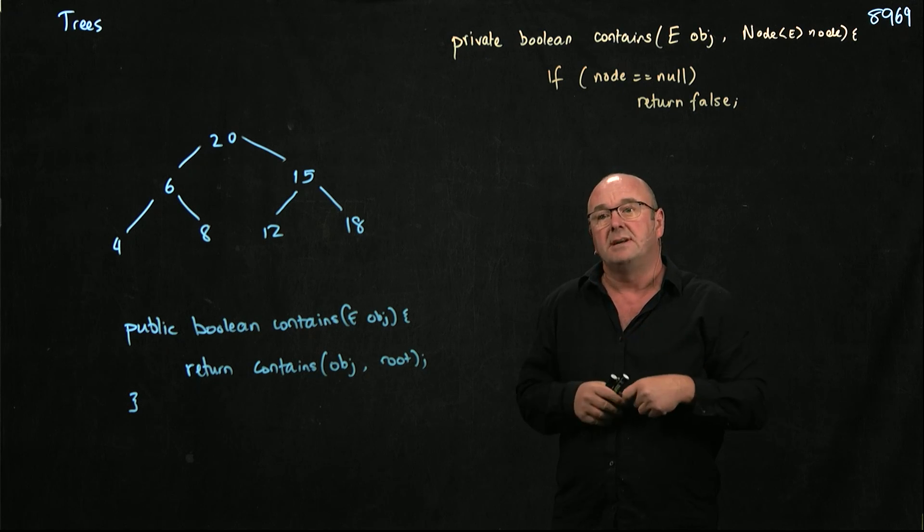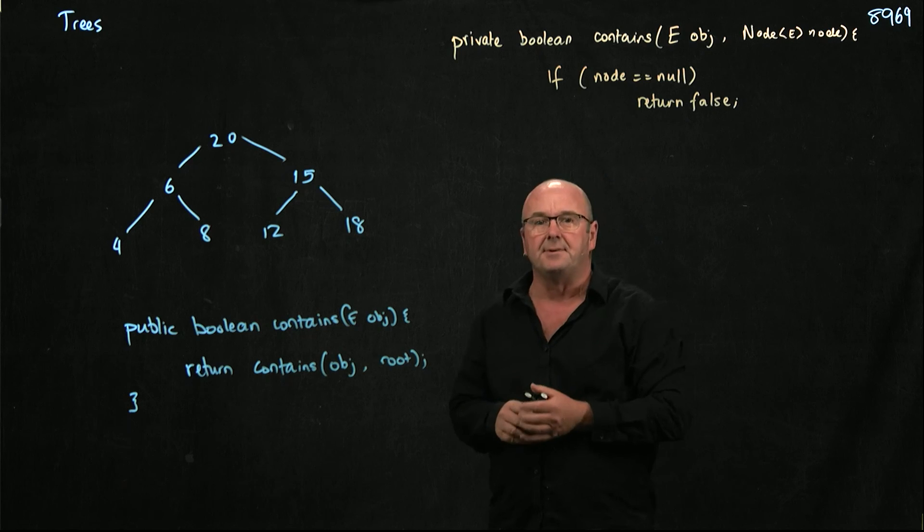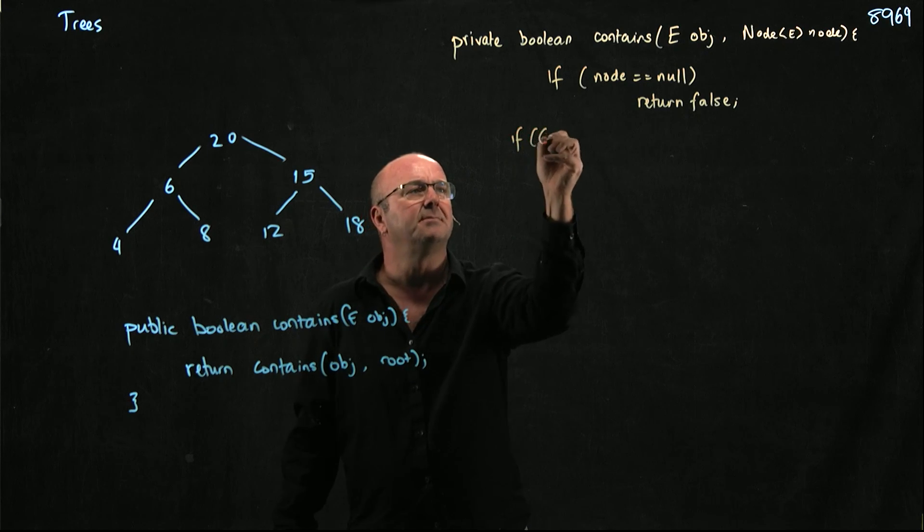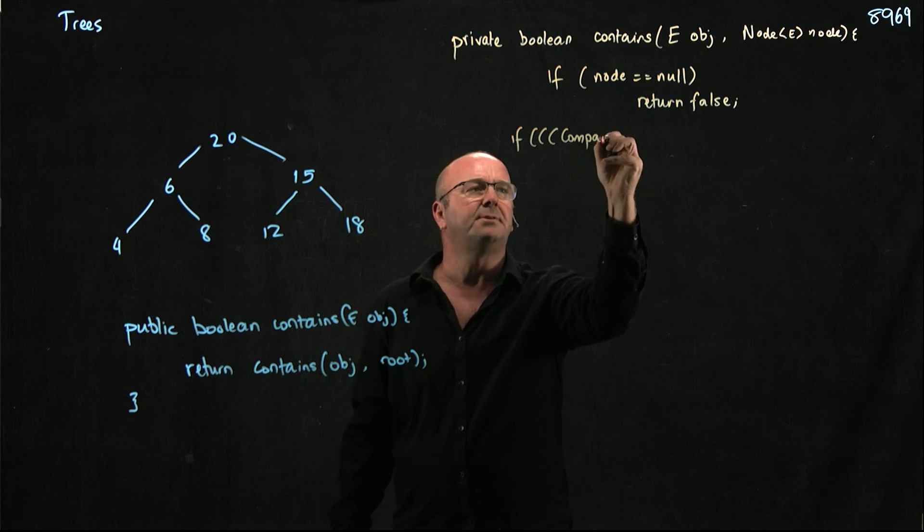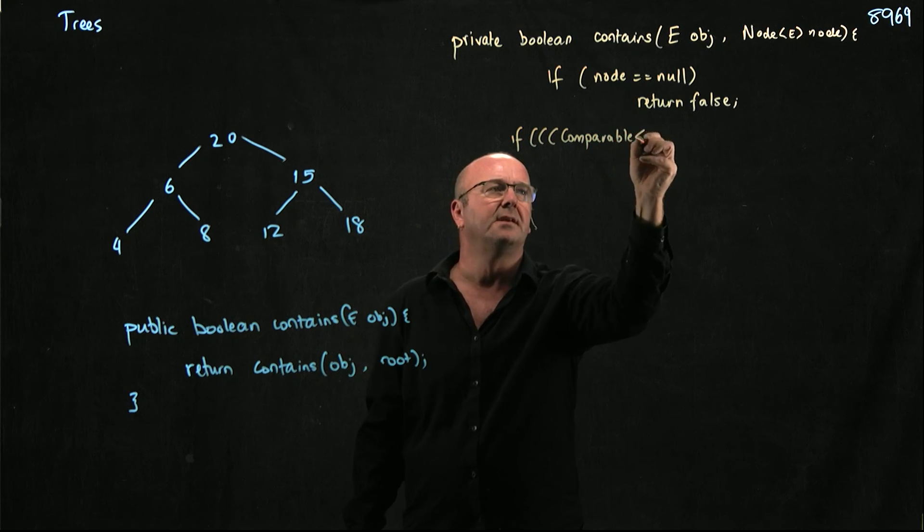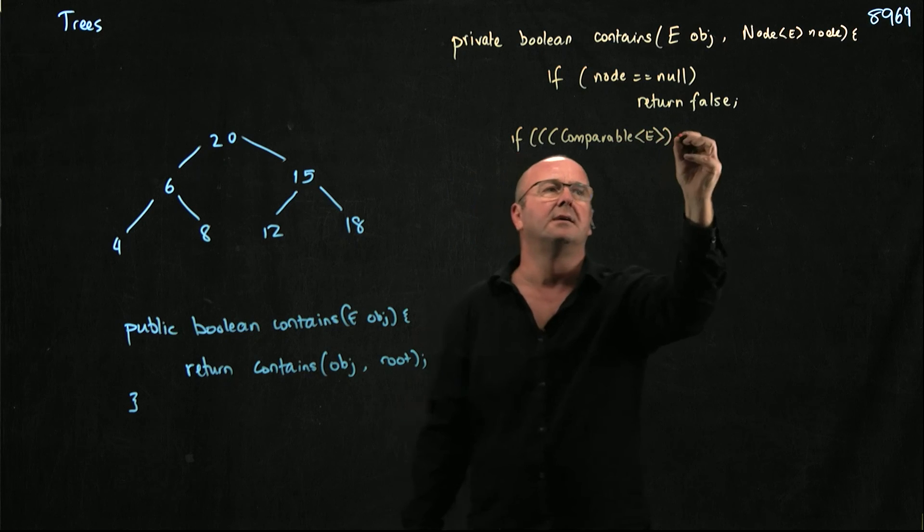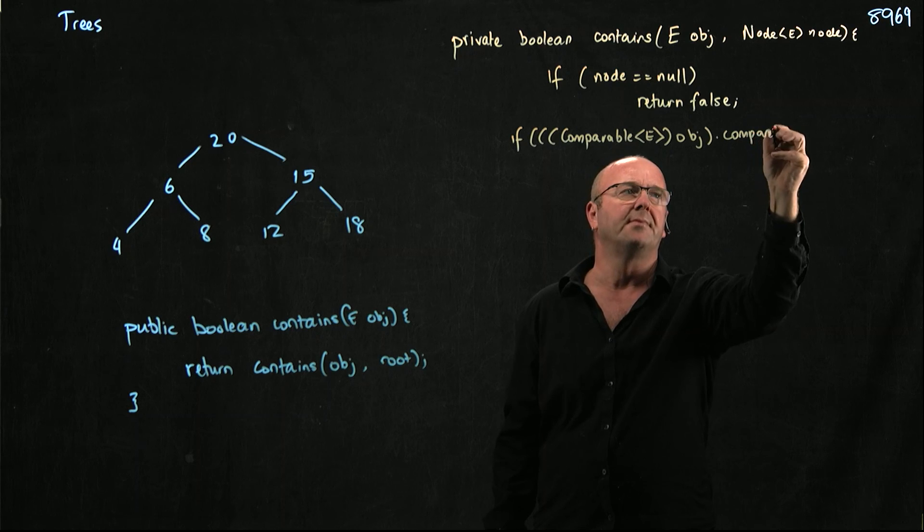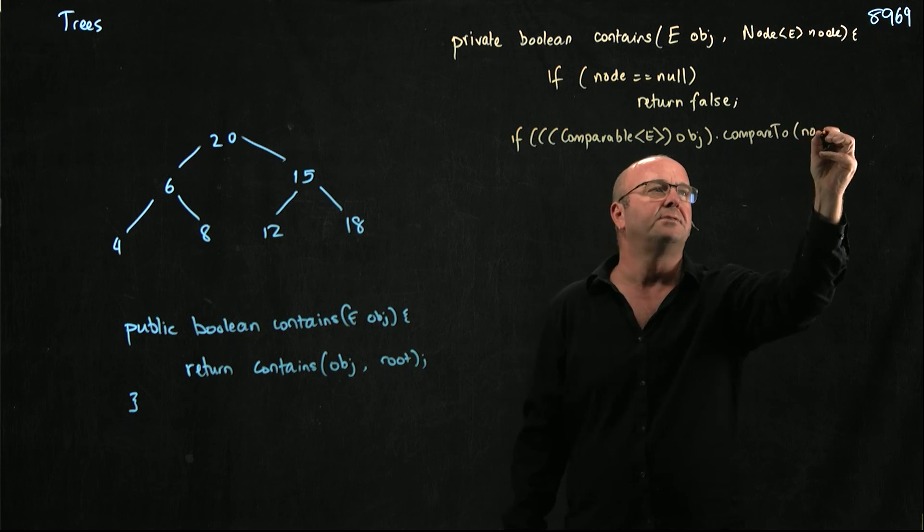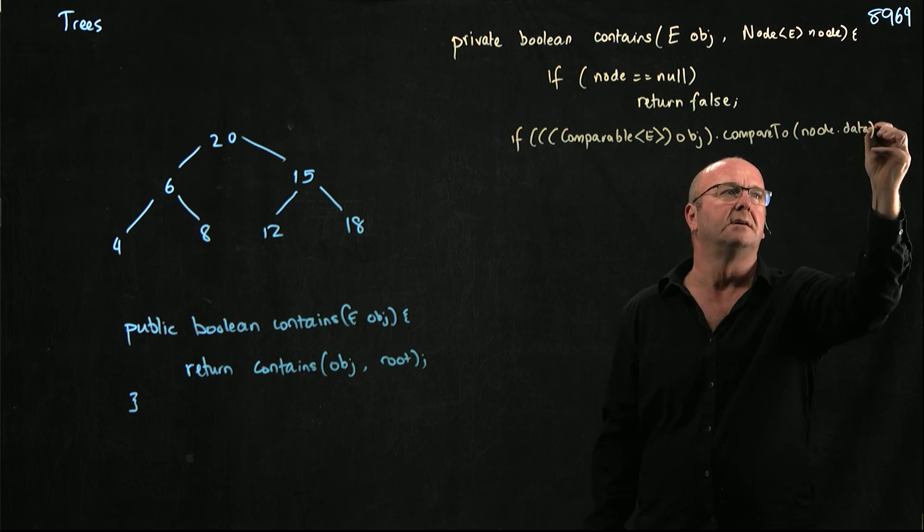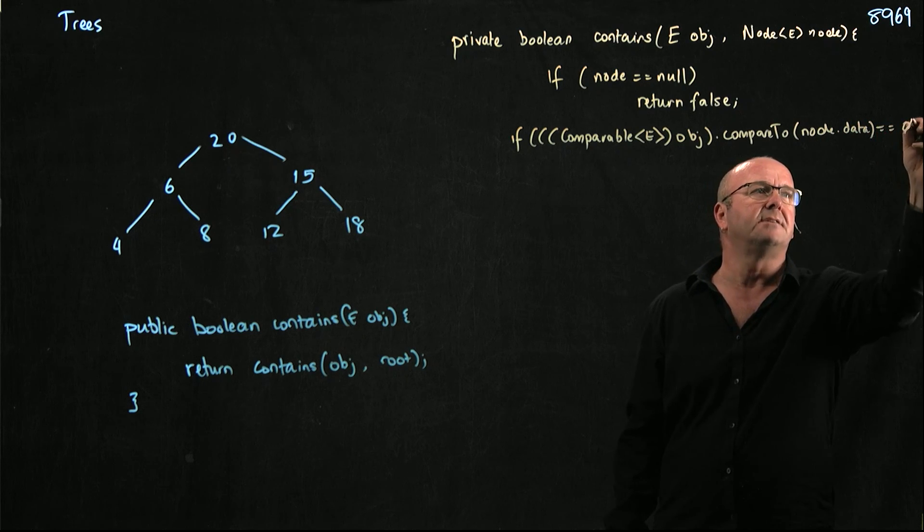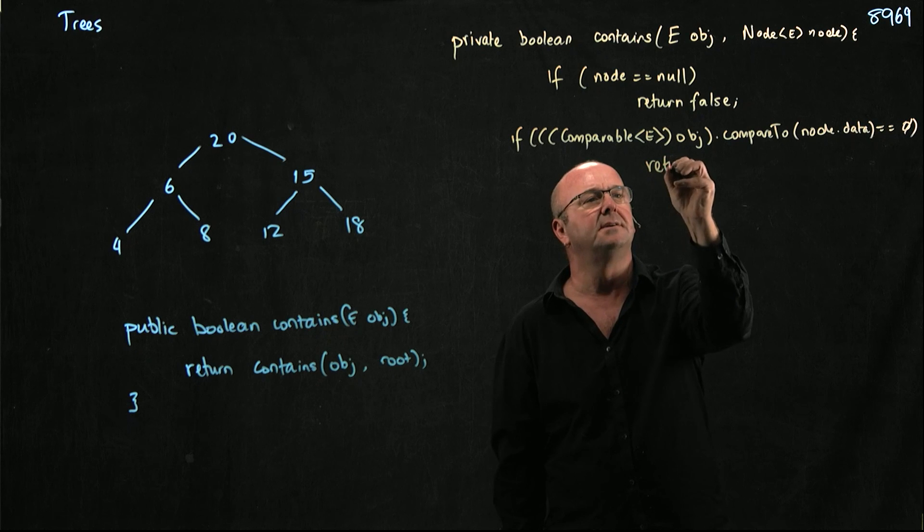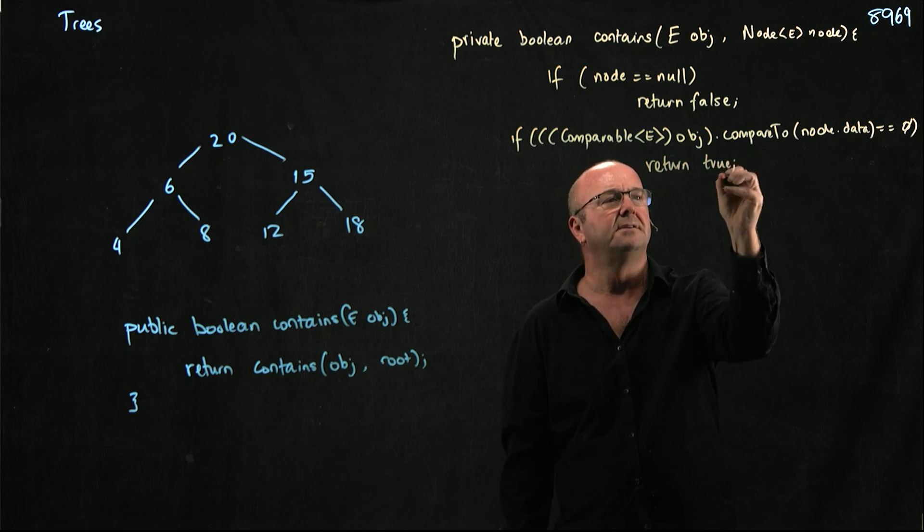So if node's not null, we need to say, is this the thing we're looking for? And we do that using our lovely comparable statement. So here's comparable e, object.compareTo node.data. If that is zero, we've found what we're looking for. Return true.